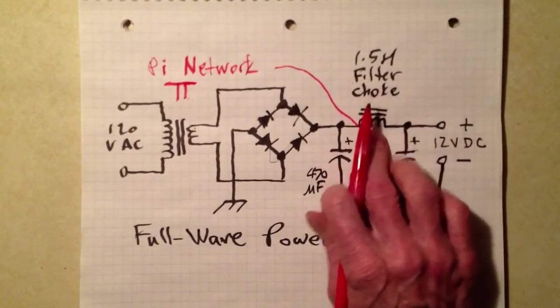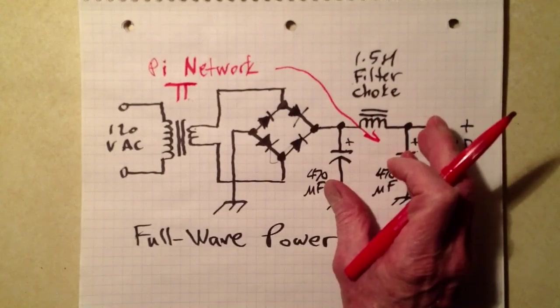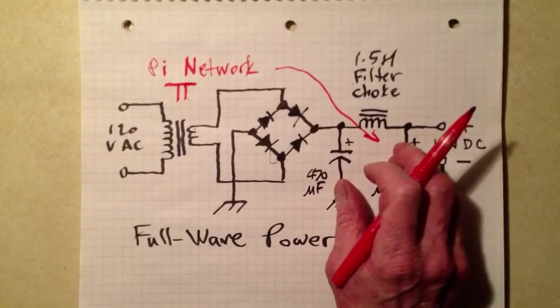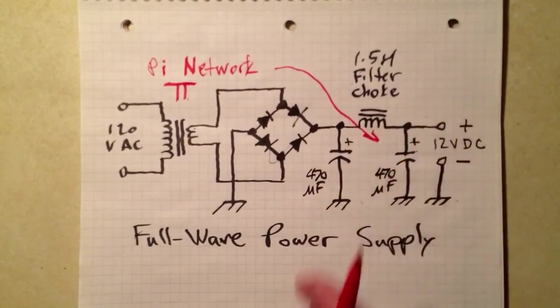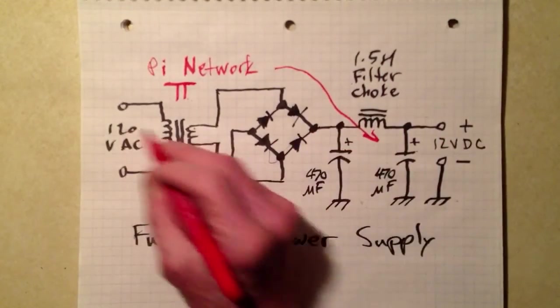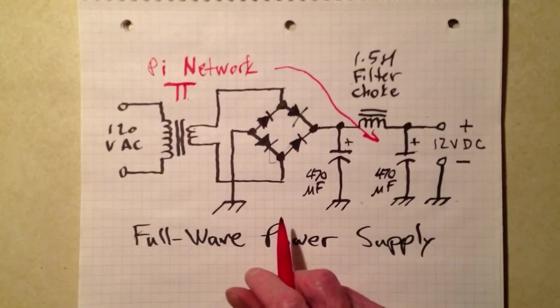And so, it acts like a very strict low-pass filter with a cutoff frequency way below the ripple frequency, which is 120 hertz, remember, coming out of here, twice the AC line frequency. If you happen to live in a country where it's 50 hertz AC line frequency, you would get a pulsating direct current at 100 hertz, but this, the cutoff frequency of this thing is like maybe 5 hertz. It is really low.